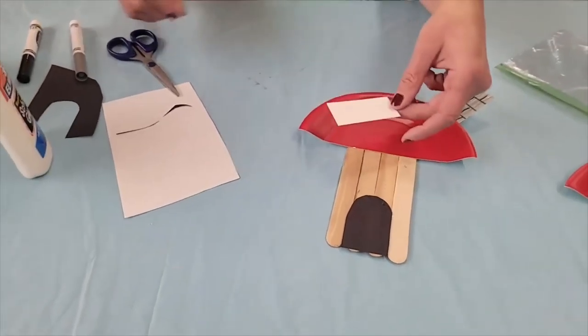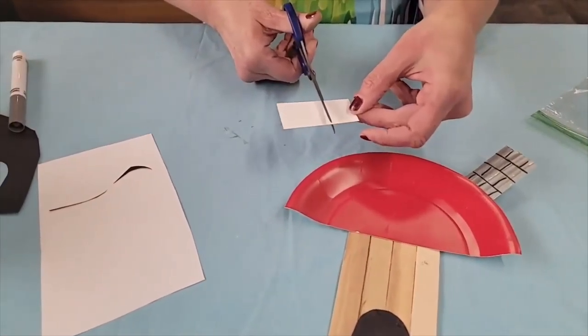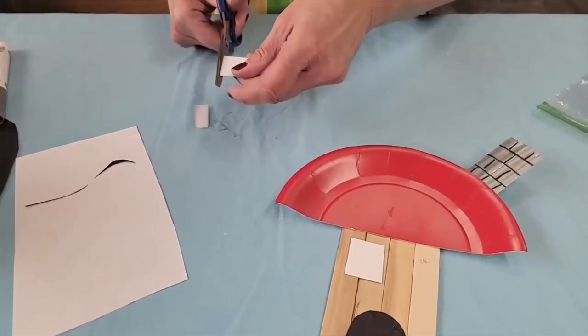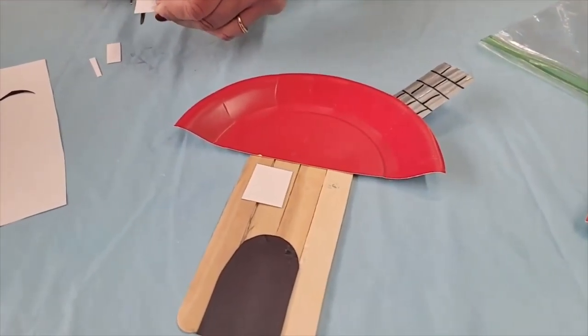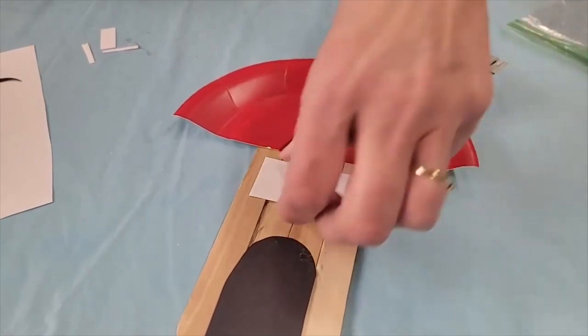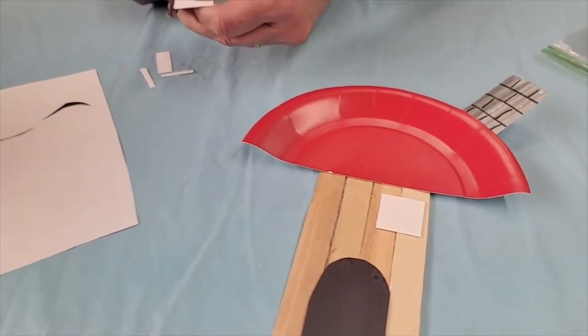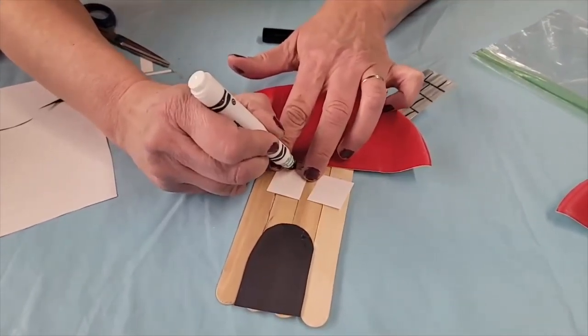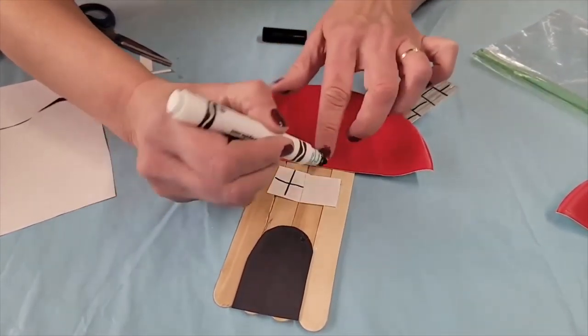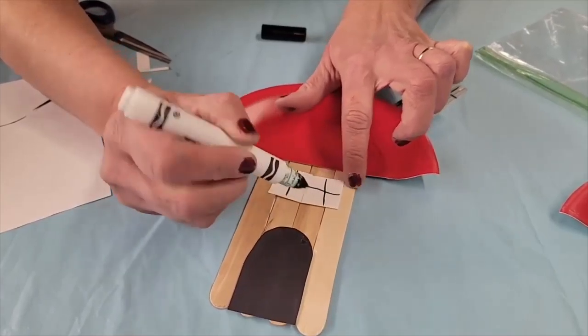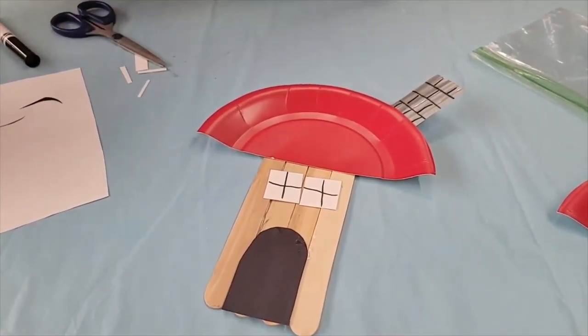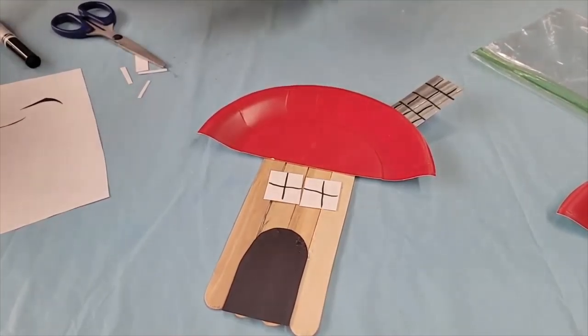We need some windows. Now with that cardstock that you had you can just cut two smaller little squares. They're not quite the same but I guess that doesn't really matter. We can put the X through it so that it looks like the little pieces of the window. You can draw some little curtains behind there if you want.